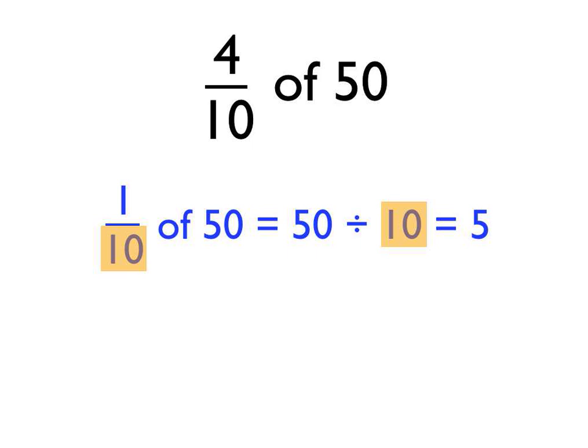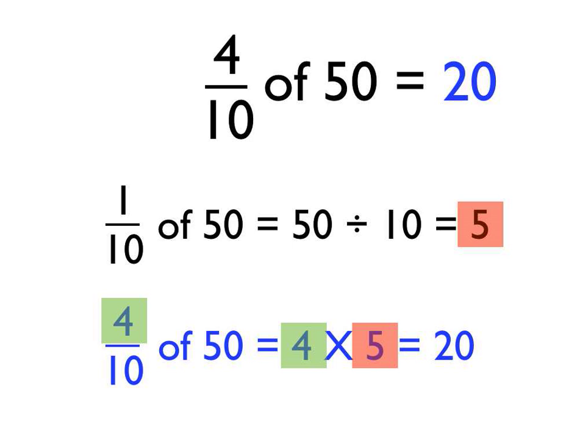But we don't want one-tenth of 50, we want four-tenths of 50 — we want four times as many. So, if one-tenth is 5, four-tenths is 4 times 5, which is 20. So, four-tenths of 50 is 20. Just to recap: if we want to work out four-tenths of 50, we start off by finding one-tenth of 50, taking 50 and dividing by 10. And then we take that answer and multiply it by four, because we wanted four-tenths.